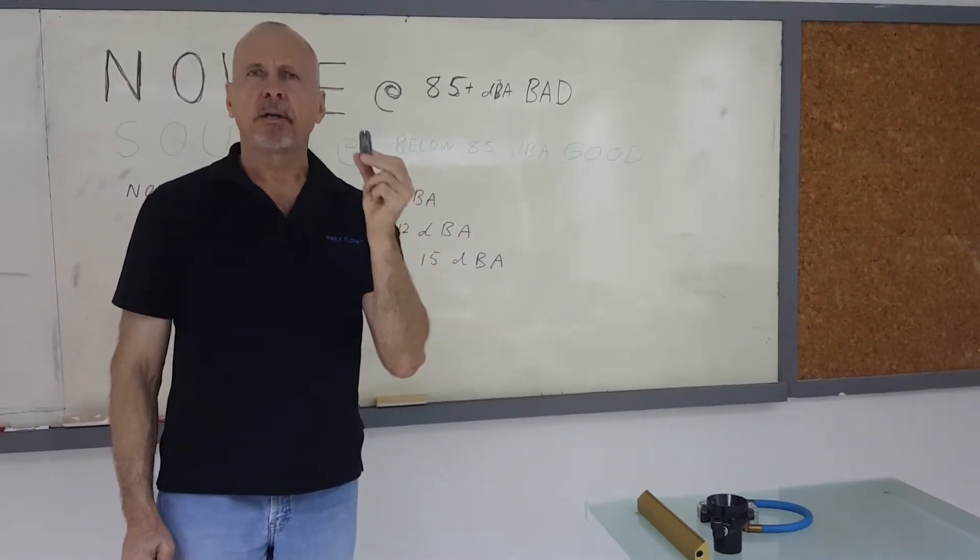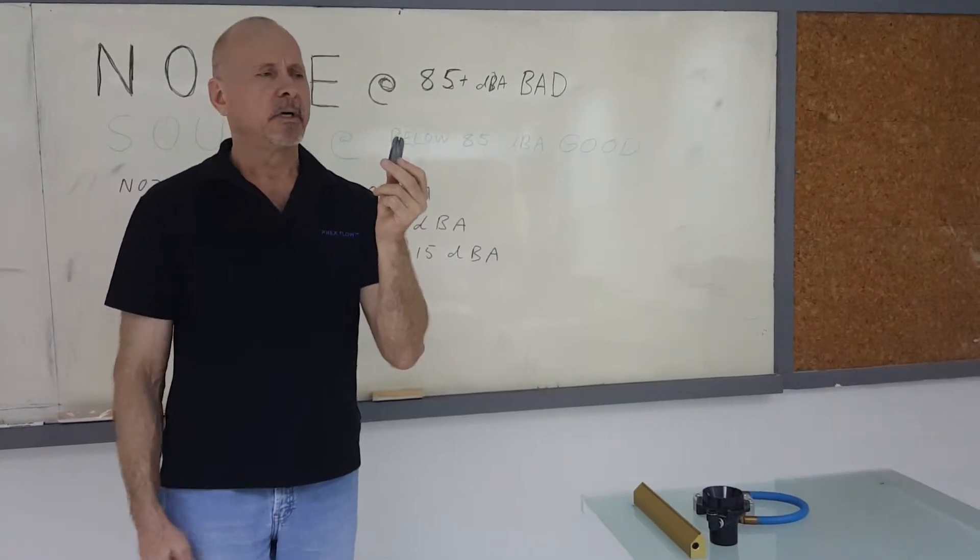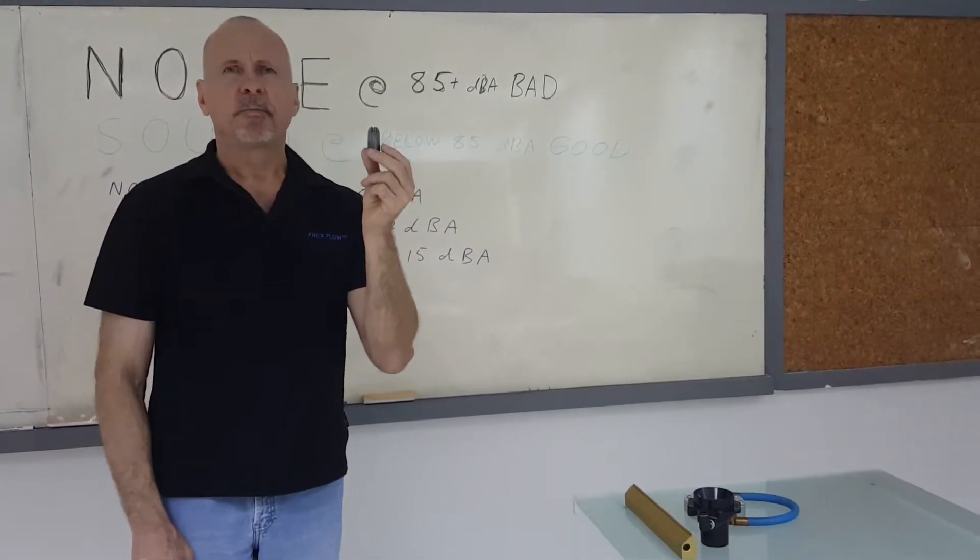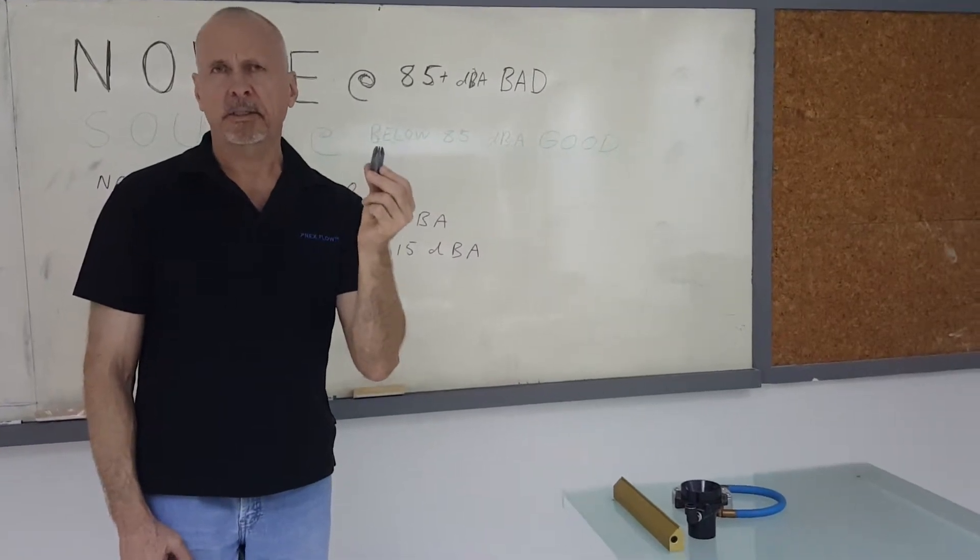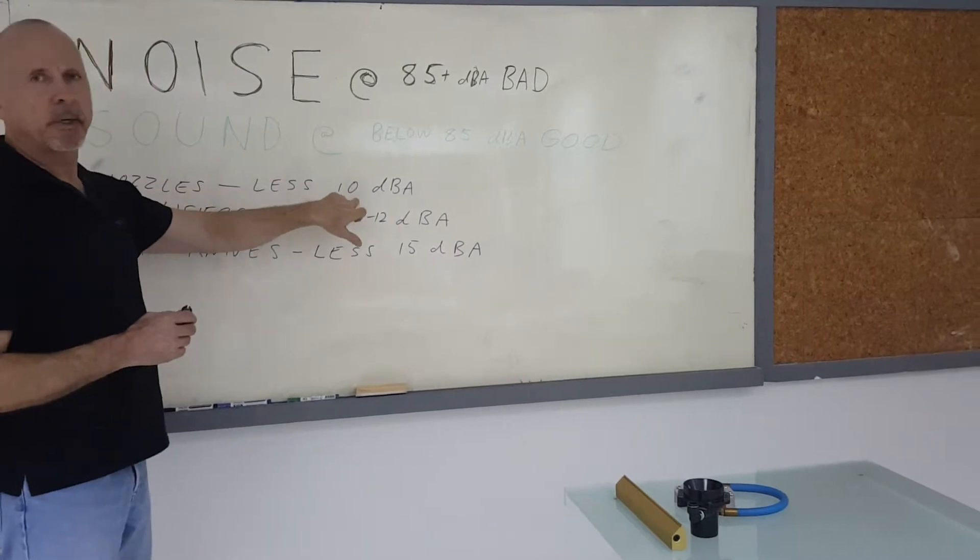A compressed air amplifying nozzle, for example, such as our air mag nozzle that's in my hand, which gives you a very high force for a very small CFM air consumption. An air nozzle can reduce noise about 10 decibels.